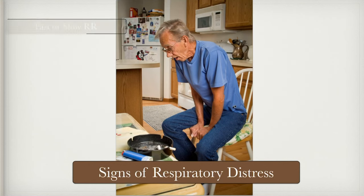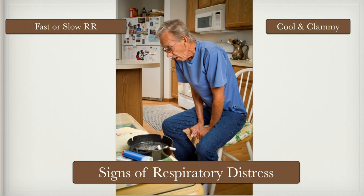If they're breathing too fast or too slow, we call that respiratory distress. If it's below 8 or more than 30, we should go ahead and ventilate the patient with positive pressure ventilations. We can look at their skin and see if it's cool and clammy — a common sign of many conditions. Your brain, when it's not getting enough oxygen, sends a signal through the sympathetic nervous system to release adrenaline. Adrenaline causes the heart rate to beat faster and stronger, causes bronchodilation, and causes them to breathe faster.